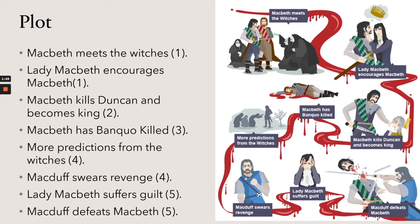In Act Four, Macbeth receives more predictions from the witches, and Macduff swears revenge because Macbeth has his wife and children killed. In Act Five, Lady Macbeth suffers guilt and ends up killing herself, and Macduff defeats Macbeth by beheading him after a big battle. Feel free to pause the video and write these key events down, noting which act they take place in.